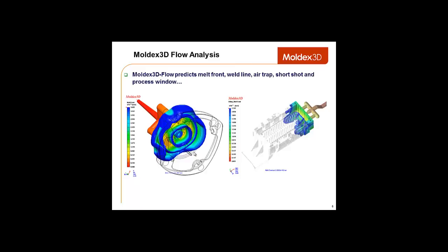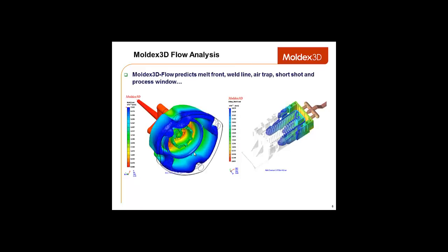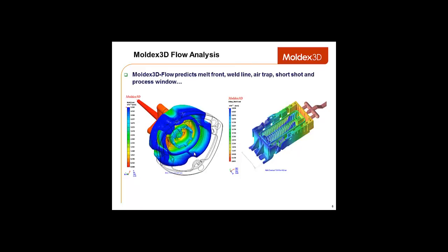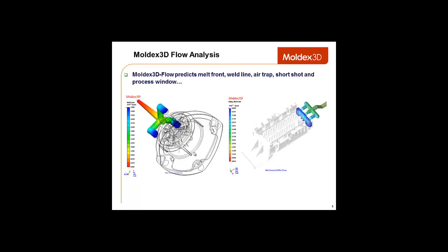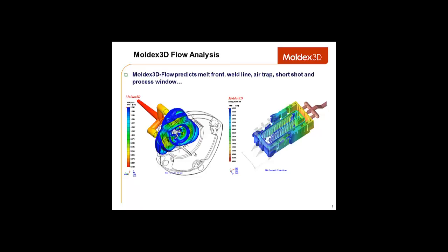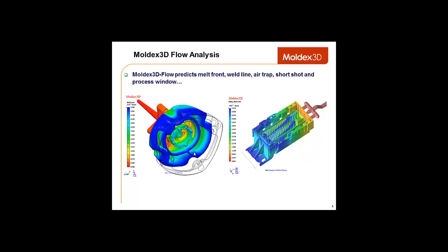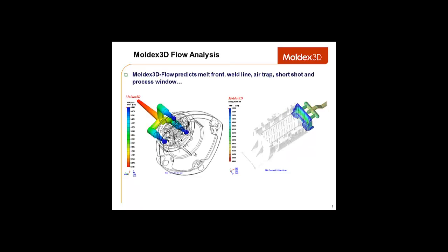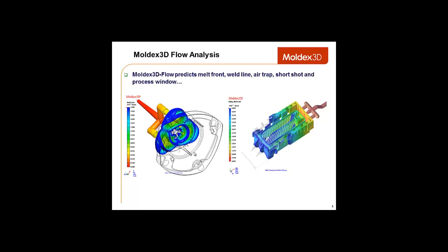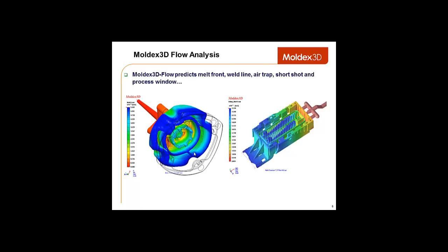Next is the Moldex 3D flow analysis. Moldex 3D is able to predict the melt front, weld lines, air traps, short shots, and all kinds of other problems that can occur during the filling analysis. This also includes unbalanced filling and thermodegradation of the plastic. With this feature, you can save time and money by catching potential problems before the parts are manufactured.